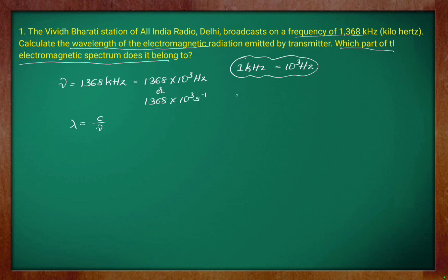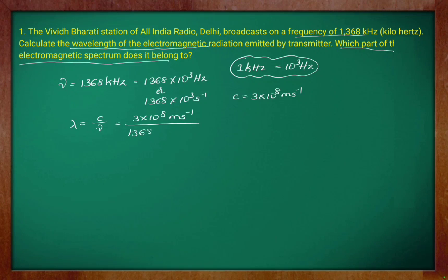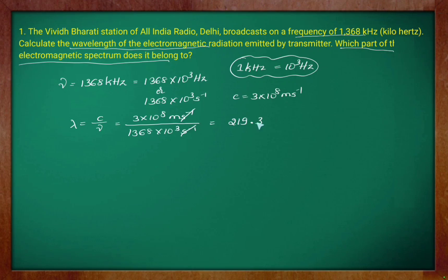Where C is the speed of light in vacuum, which is 3 into 10 to the power 8 meter per second. Substituting the values, C is 3 into 10 to the power 8 meter per second divided by the frequency 1368 into 10 to the power 3 per second. After the units cancel and simplifying the remaining terms, we get the wavelength as 219.3 meter. Radiation of this wavelength corresponds to the radio wave region of the electromagnetic spectrum.